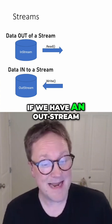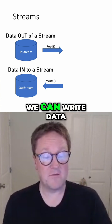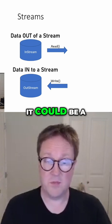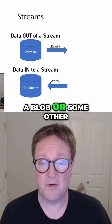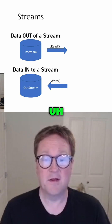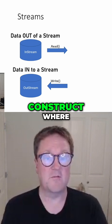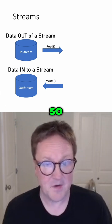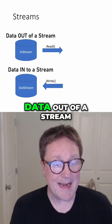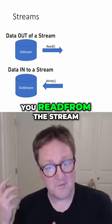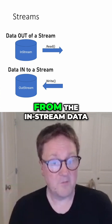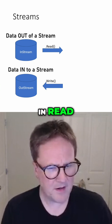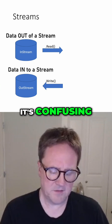If we have an out stream, we can write data to the stream and thereby get data into it — in this case it could be a blob or some other construct where you need to get either data out or data in. So data out of a stream, you read from the stream, from the in stream; data into a stream, you write to the out stream. In read, out write. It's confusing.